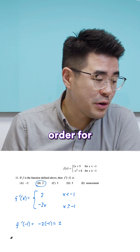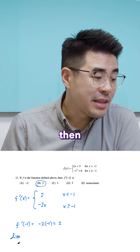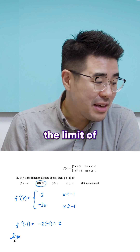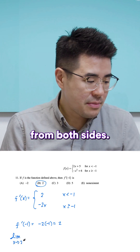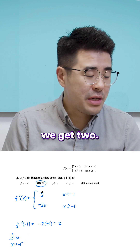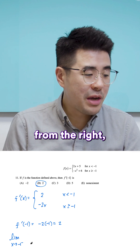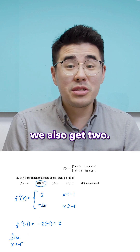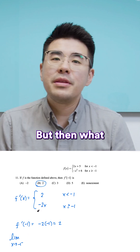In order for a function to be differentiable, the limit of the derivative has to exist from both sides. If we evaluate the limit from the left, we get 2. If we evaluate the limit from the right, we also get 2. So students still get 2.